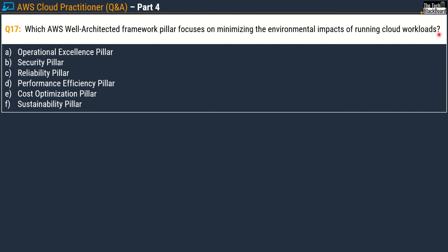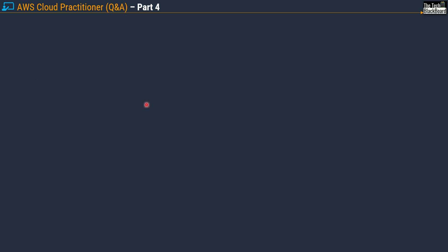The options are again the same six pillars: Operational Excellence, Security, Reliability, Performance Efficiency, Cost Optimization, and Sustainability. The keyword here is environmental impacts, so the correct answer is Option F, the Sustainability pillar.